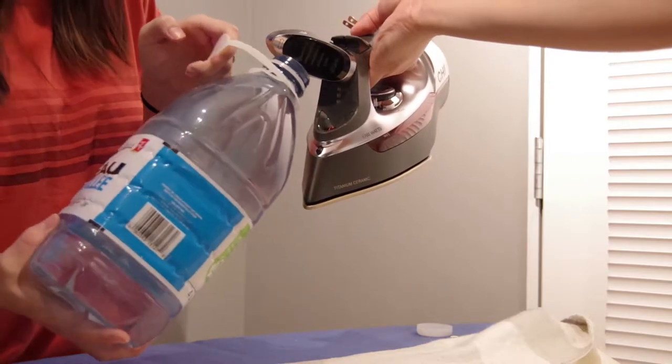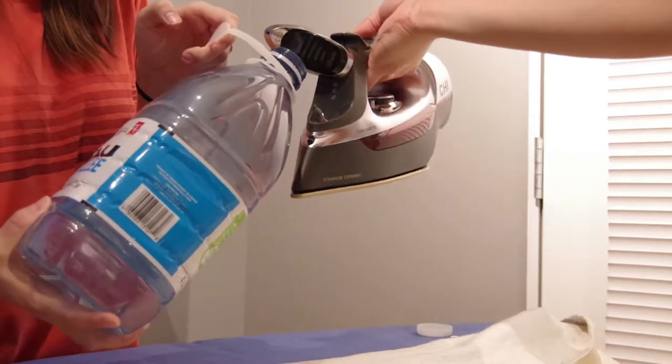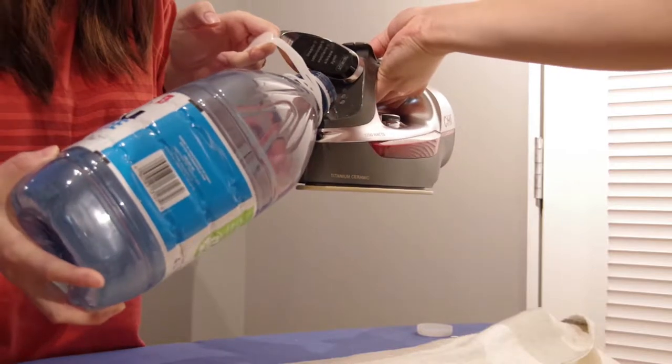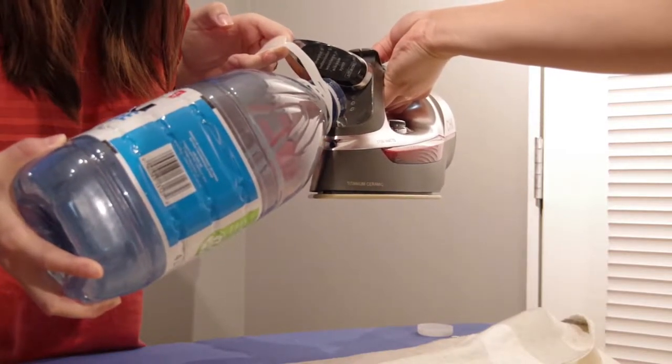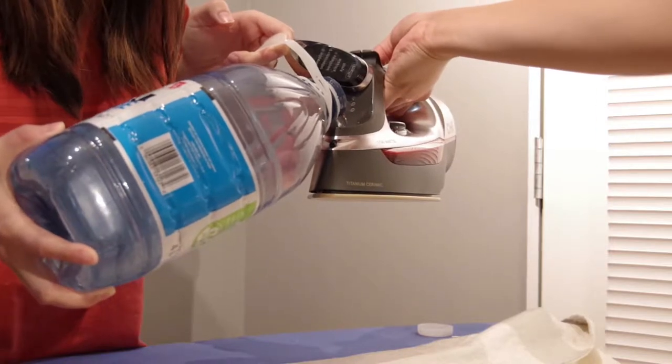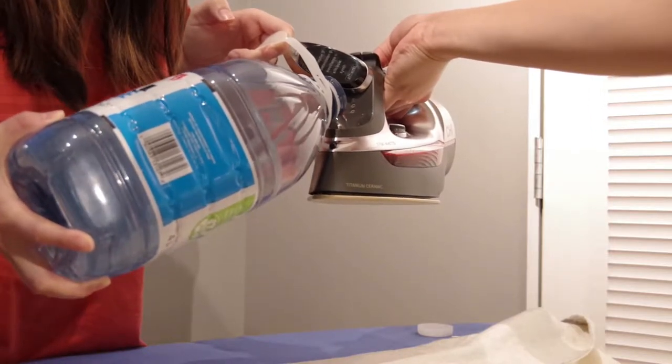Hello, in this video I will be using the Qi Electronics Steam Iron on two different types of fabric, cotton and polyester. I use distilled water to prevent calcium buildup.